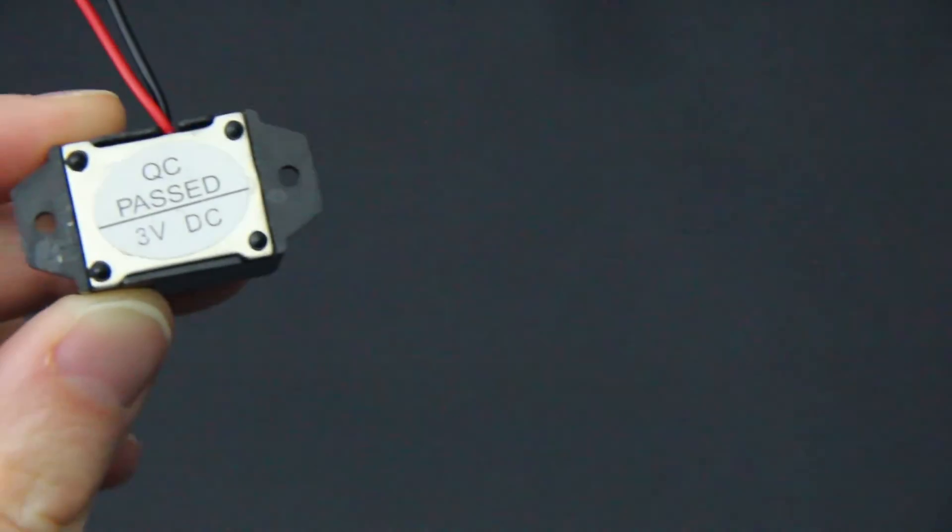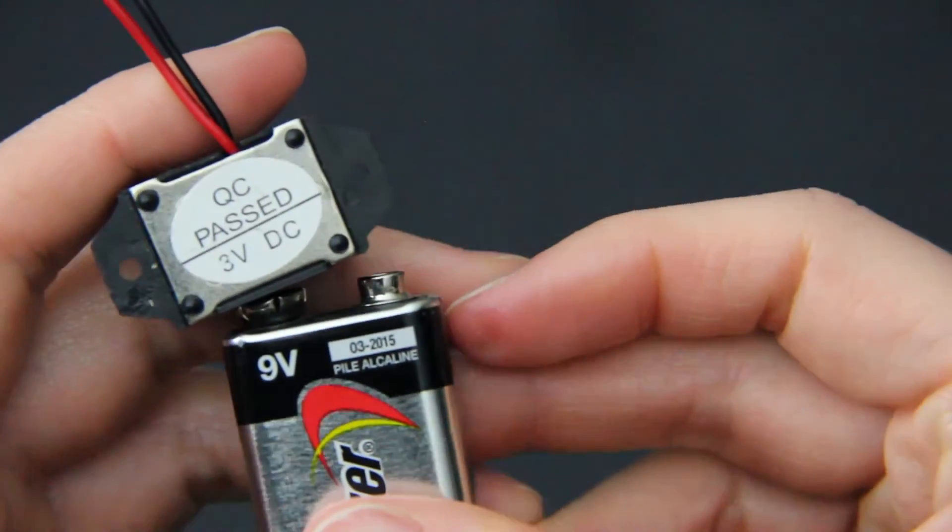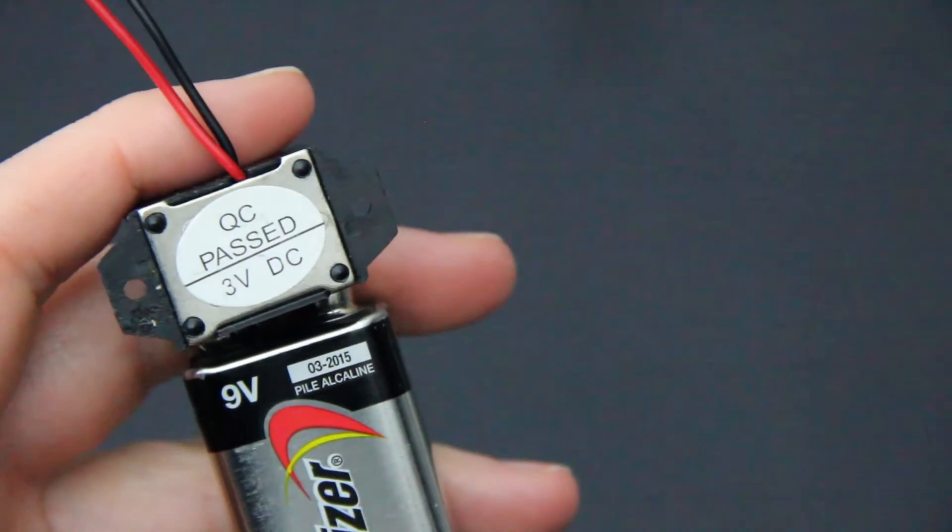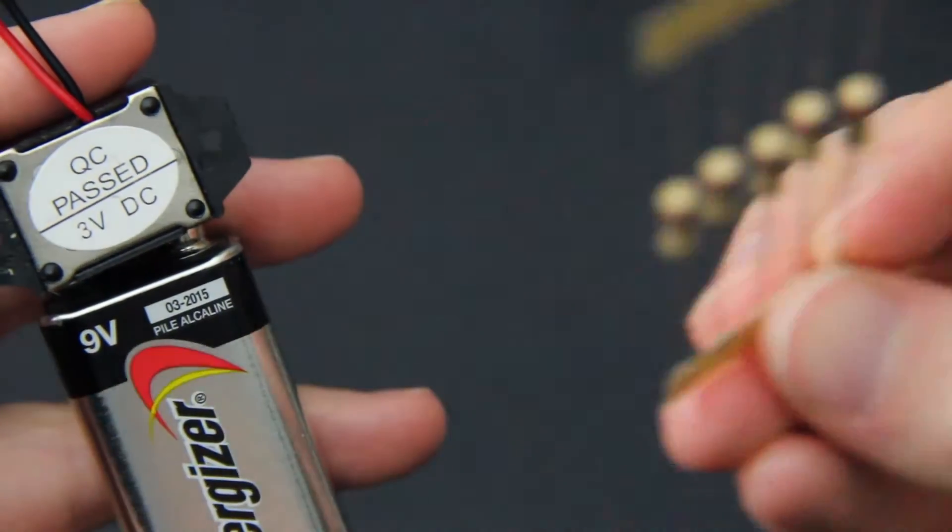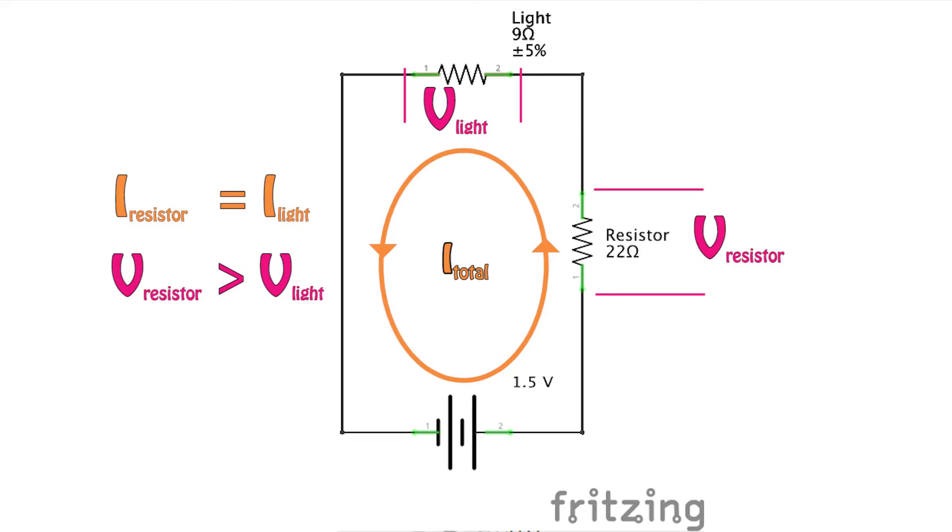This means if there's a component in our circuit that is rated for a lower voltage, we need to put more resistive components in line with them to reduce the voltage that it's going to see. This also means if you want all the components to have the same current, you need to place them in series.